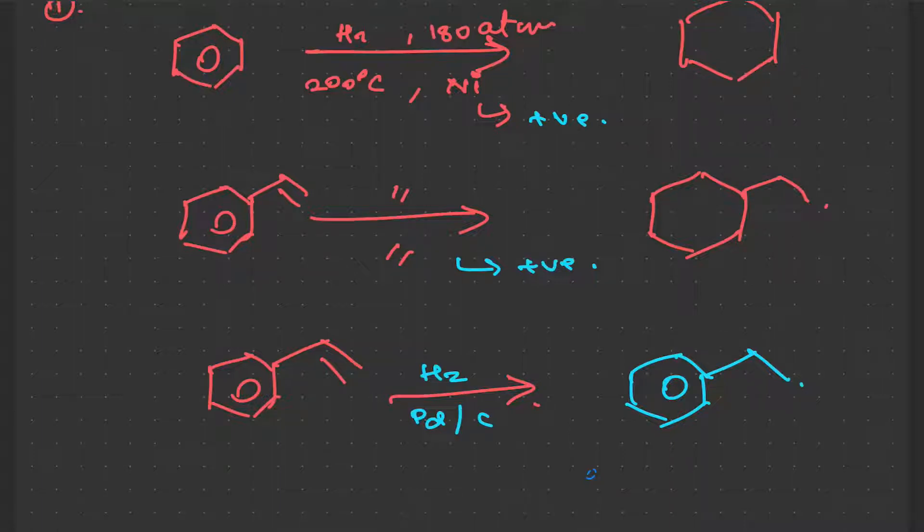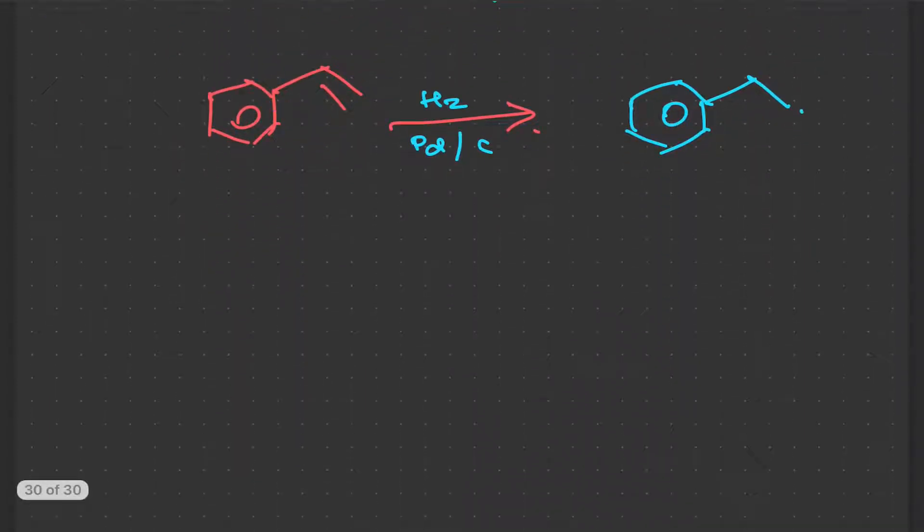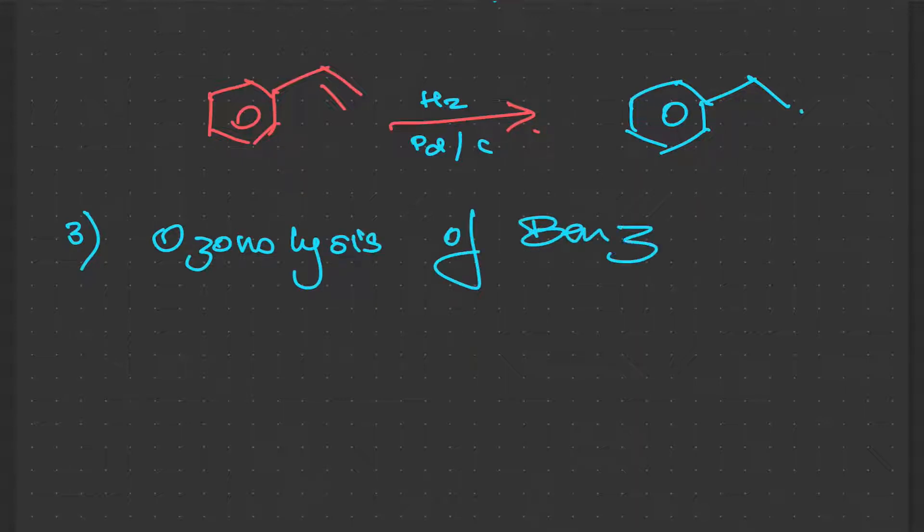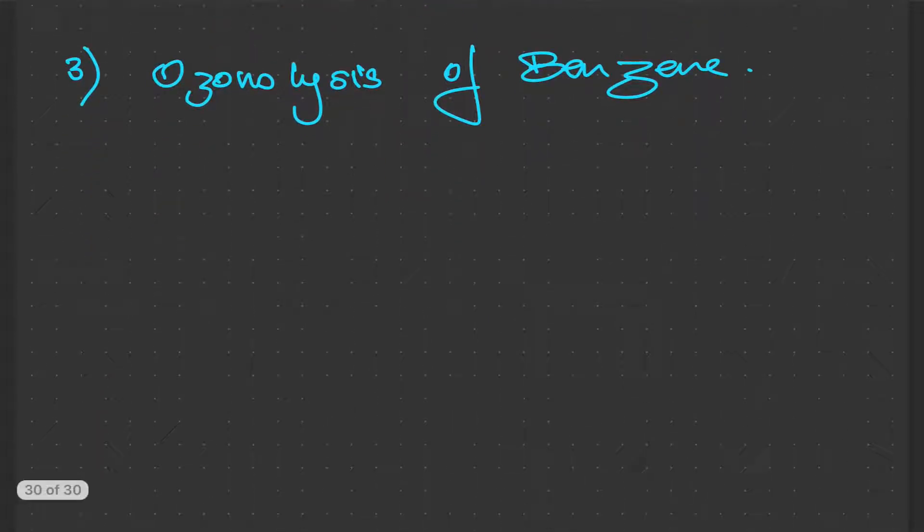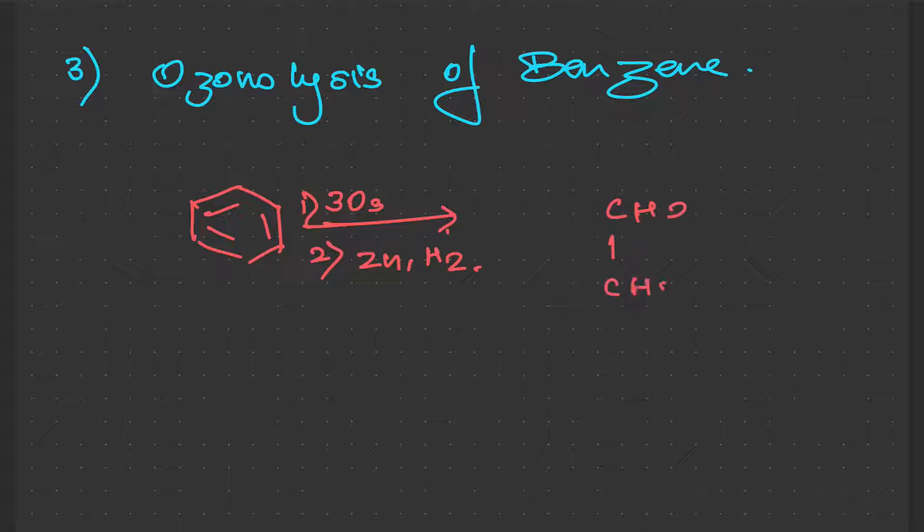Now we'll study ozonolysis of benzene. For mechanisms please go through the hydrocarbon chapter notes or text, any of the references, so you would find the mechanism over there. Let's say it would require three molecules of ozone, and then let's say this is a reductive ozonolysis. We get this glyoxal.